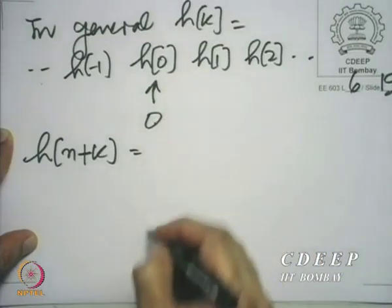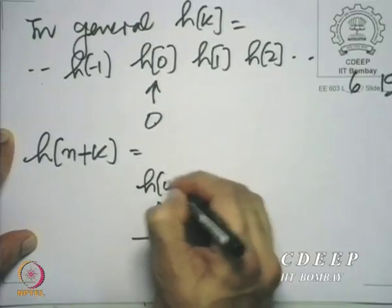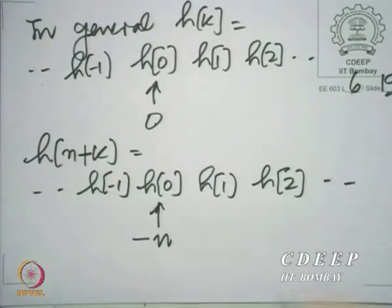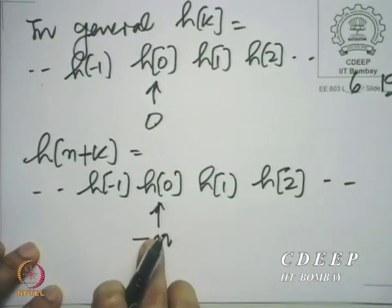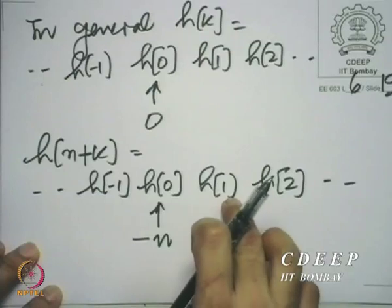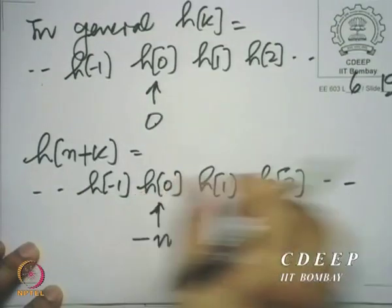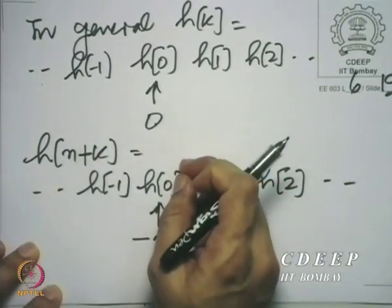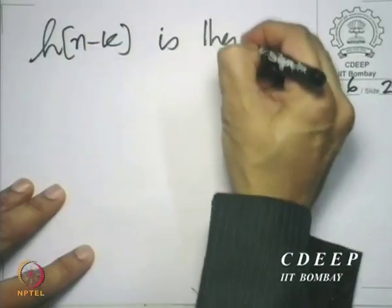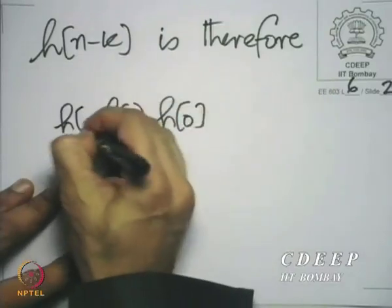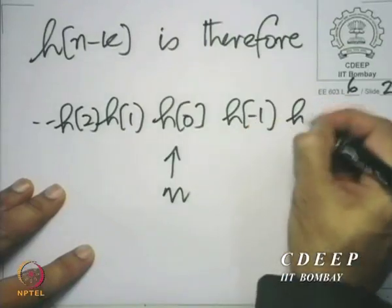So h[n+k] appears at minus n and then upon reflection, minus n goes to plus n. h[1], which appears after minus n, will now appear before plus n. So what you do is move this to the point n and then mirror all the points around that point n. Therefore, h[n-k] has h[0] at n, h[1] at n minus 1, h[2] and so on behind, and h[minus 1], h[minus 2] going forward.